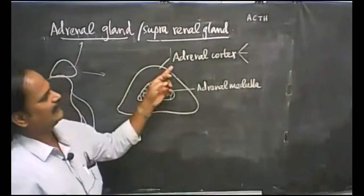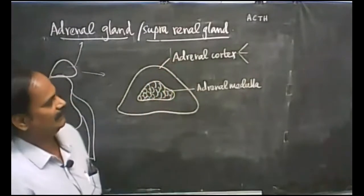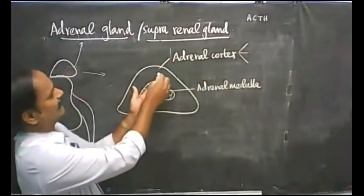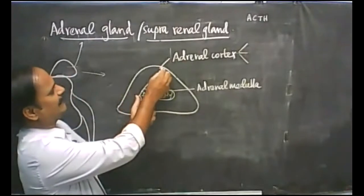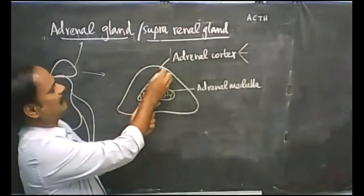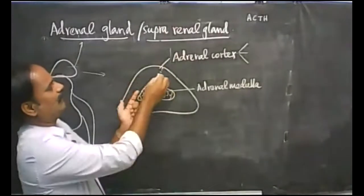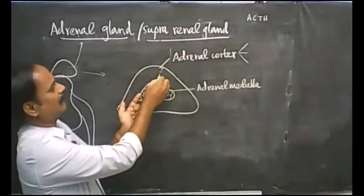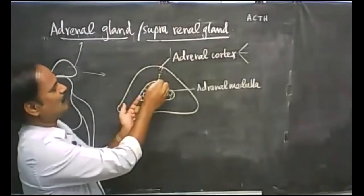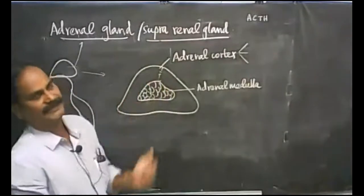Now let's take adrenal cortex alone. The adrenal cortex has got three areas, three zones. The major part is the first zone, followed by the middle zone, then the innermost zone.